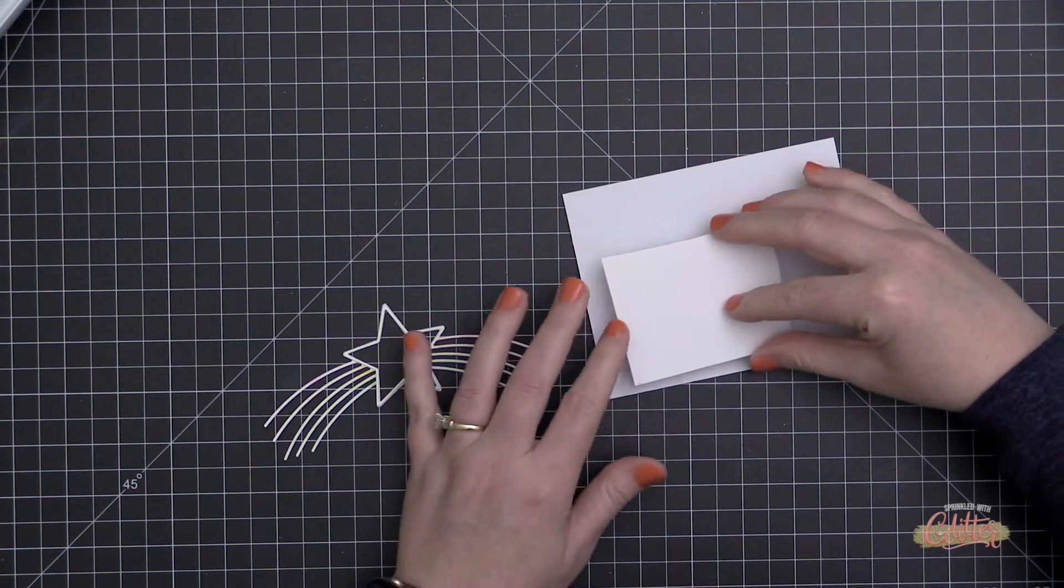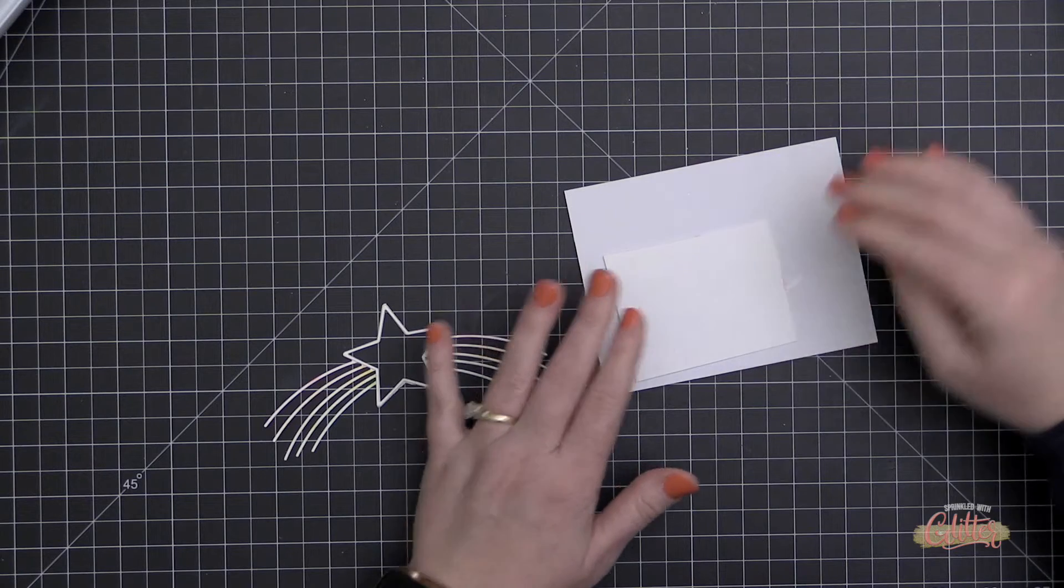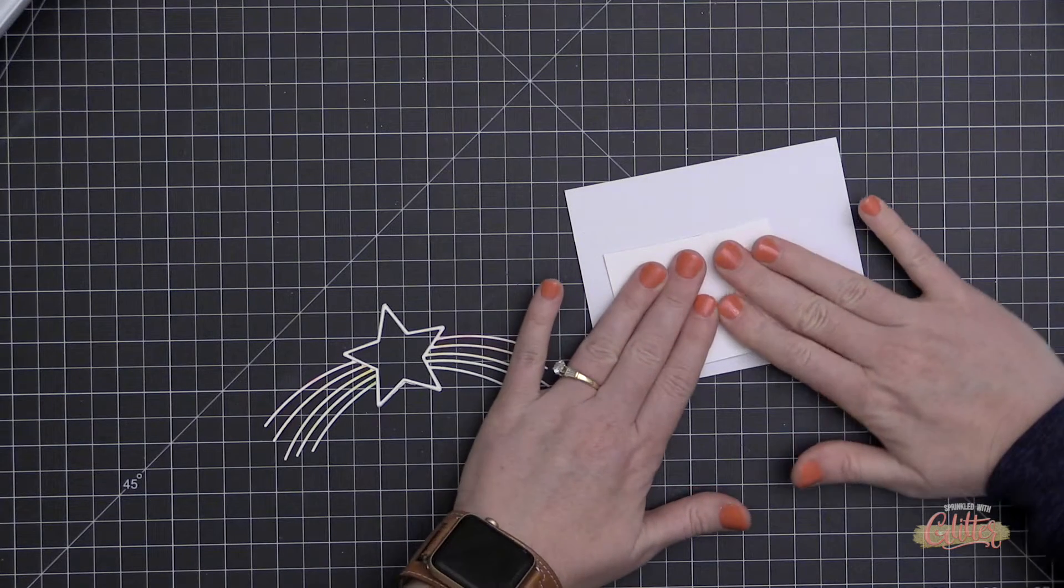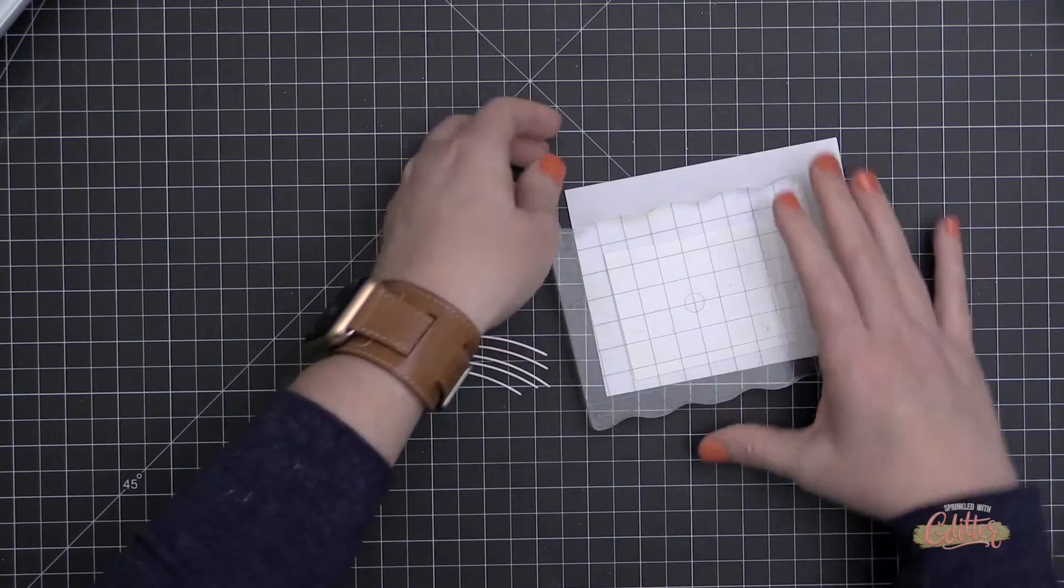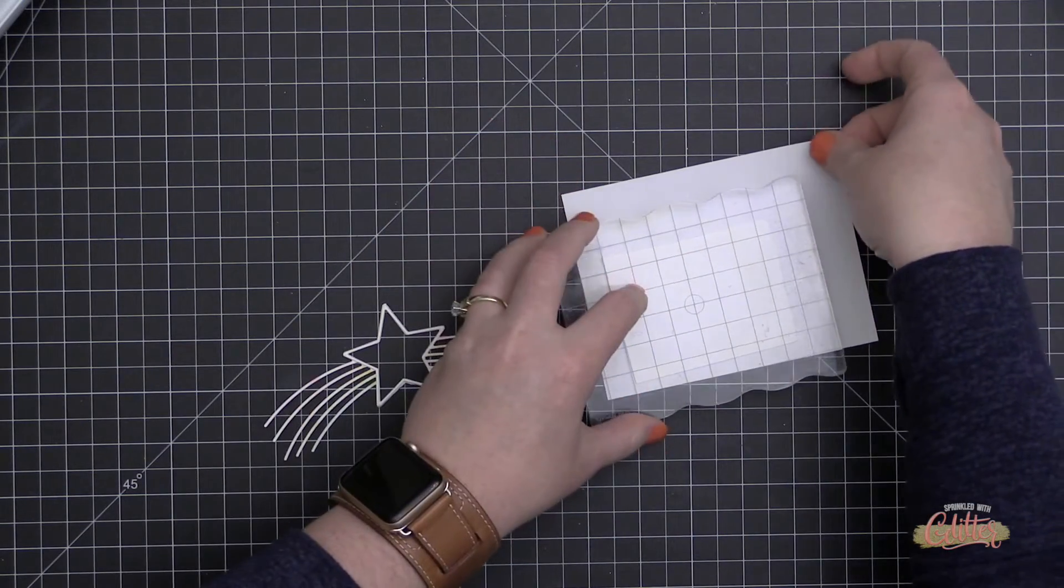Once I have enough shaker guts in there, I'm going to add some Multimedia Matte on the back of that and place my little white cardstock piece right over the back so that those are all sealed in there and I won't have any leaking guts, because there's nothing worse than a shaker with leaking guts.